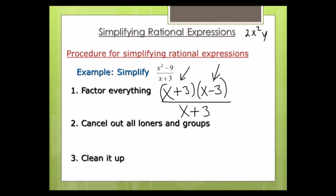I cannot break up x plus 3 into x and 3 — it is x plus 3. The plus and minus signs act as a handcuff and you cannot break them apart. With loners, I can break them apart — that's a 2, a couple x's, and a y — and I can cross them out individually because there's no plus or minus signs in that monomial. But when there are plus or minus signs, I treat those as groups.